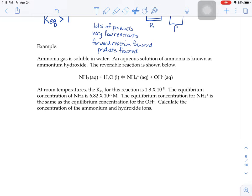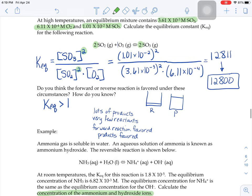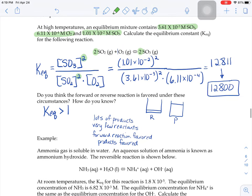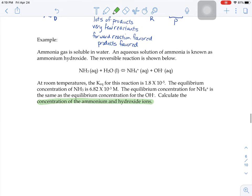In this problem, it's telling us what the KEQ value is, tells us some equilibrium concentrations, and it wants us to find the concentration of the ammonium and hydroxide ions. So all the ones that we've been doing so far have had us solve for K, but it might have us solve for a different part of the expression. So let's see what we know. First, let's write an equilibrium expression.